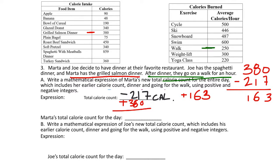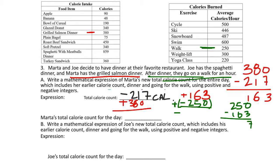Then Marta goes on a walk for one hour, which burns 250 calories, so we add -250. Now there are more negatives than positives: 163 + (-250). Taking the big number 250 minus 163 gives 87, so Marta has burned a net 87 calories at the end of the day after dinner and the walk.